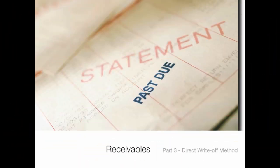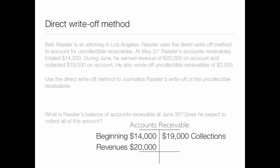This is part three in our receivables and accounting for uncollectibles series, and we'll be discussing the direct write-off method for accounting for uncollectible accounts. One thing to note is that when using the direct write-off method, there will not be an allowance account as there was under the two allowance methods we discussed in the prior part of this series.